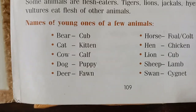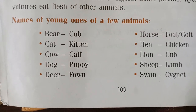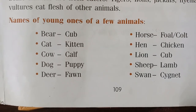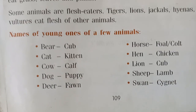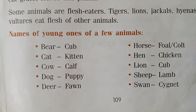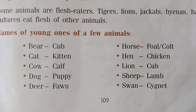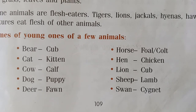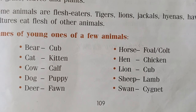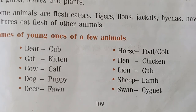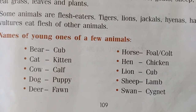Now we will know the names of young ones of a few animals. Bear — cub. Cat — kitten. Cow — calf. Dog — puppy. Horse — foal (also called colt). Hen — chicken. Lion — cub. Sheep — lamb. Swan — cygnet.